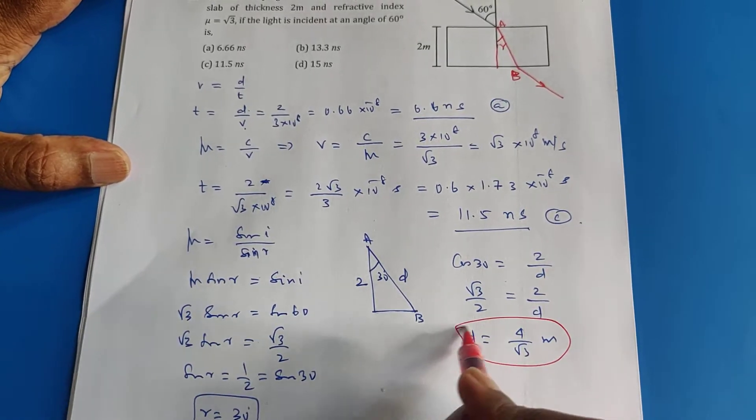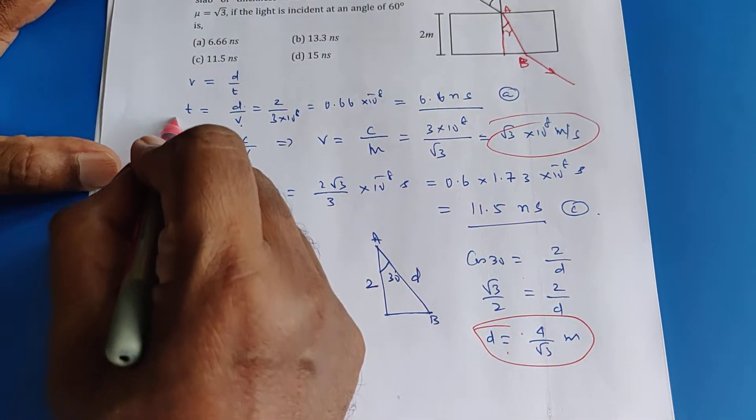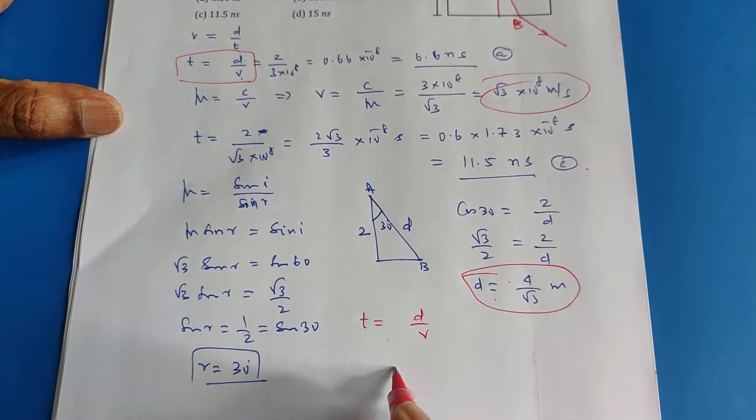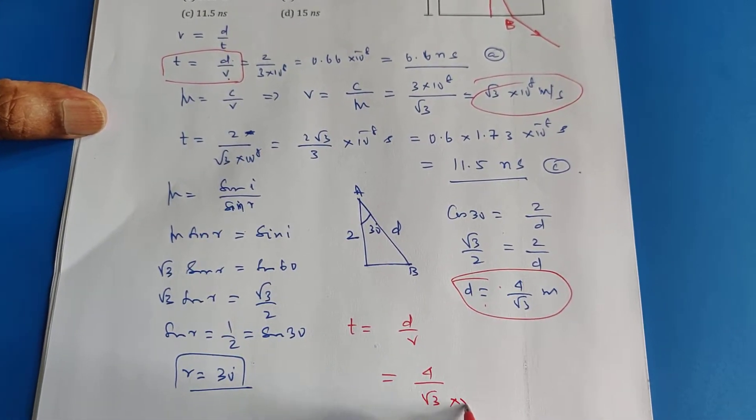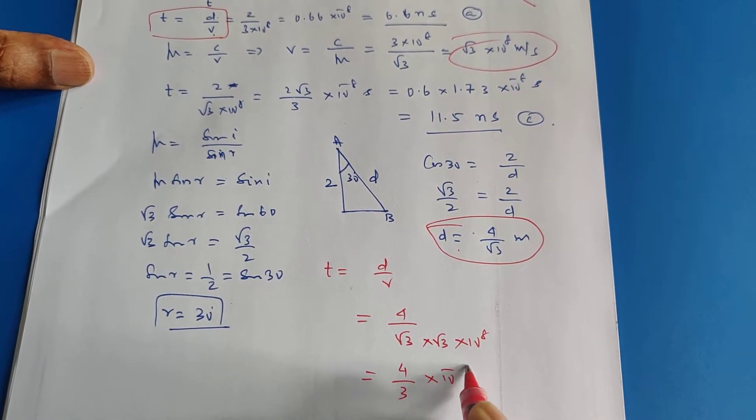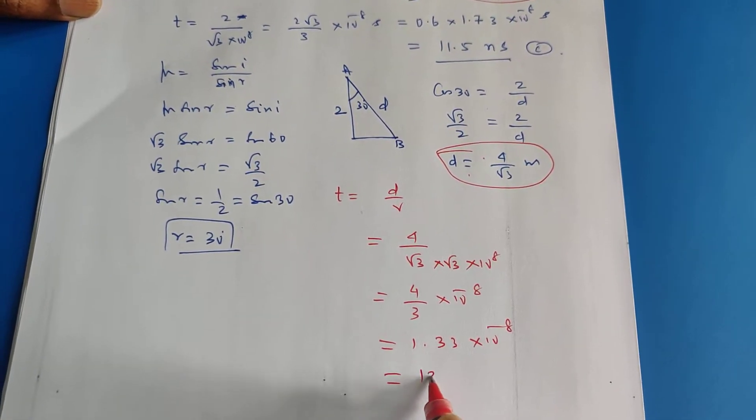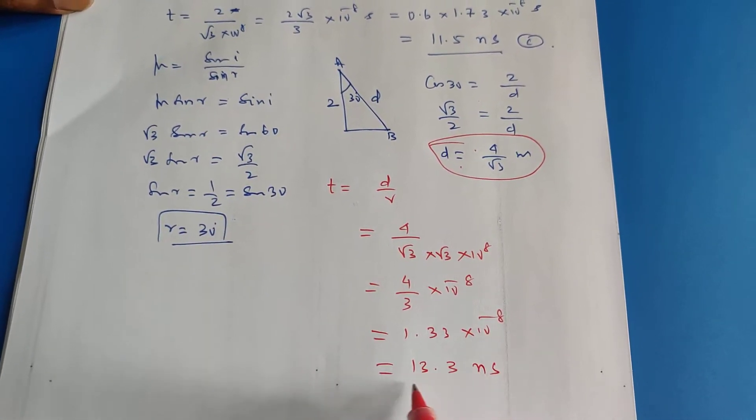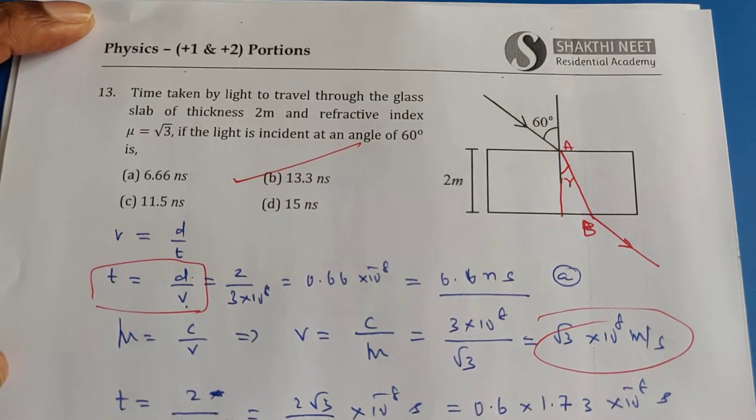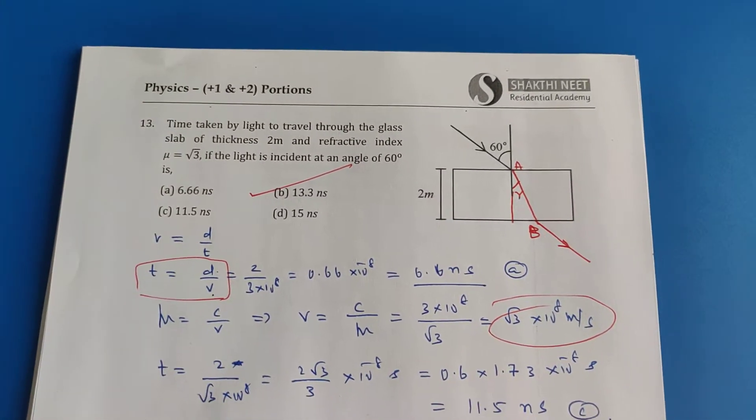This is the distance travelled by light. And this is the velocity of light. Time taken equals distance by velocity. What is the distance? 4 by root 3. What is the velocity? Root 3 into 10 power 8. How much is the answer? 4 by 3 times 10 power minus 8. This is 1.33 times 10 power minus 8, which can be written as 13.3 nanoseconds. The correct answer to this problem is option B. I hope you like this problem. Now I am going to my next problem.